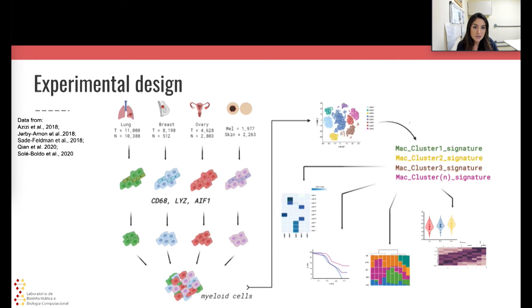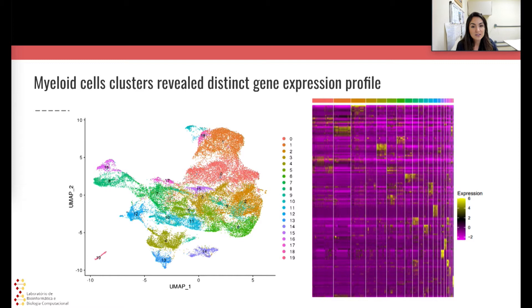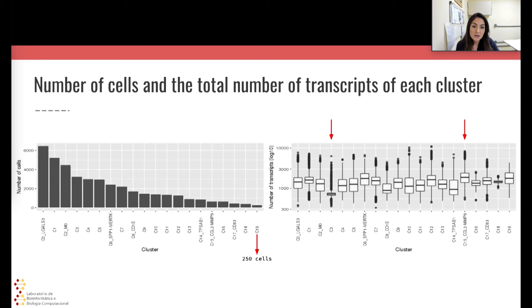We started to integrate several single cell RNA-seq data derived from both tumor and normal samples from different sites in the body. Using the markers depicted here in this slide, we were able to select the myeloid-derived cells and analyze these different subpopulations and their impact on tumor progression. So far, we were able to integrate more than 40,000 cells and identify 20 clusters. When analyzing differentially expressed genes, we saw that the myeloid cell subpopulations present distinct gene expression profiles.